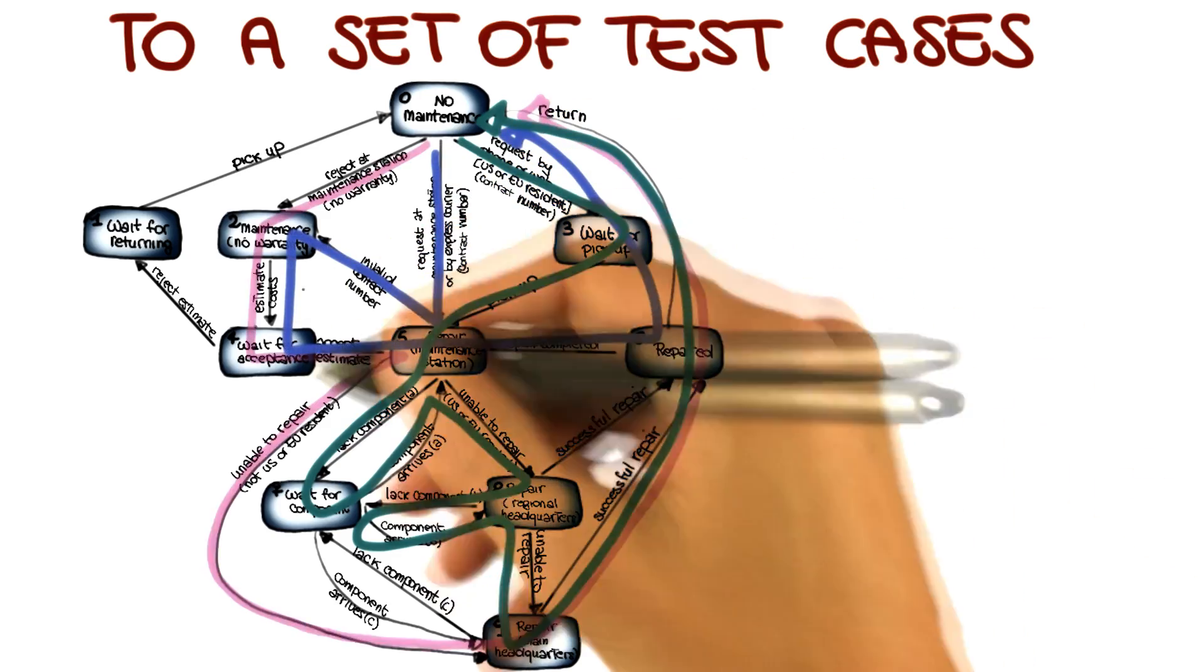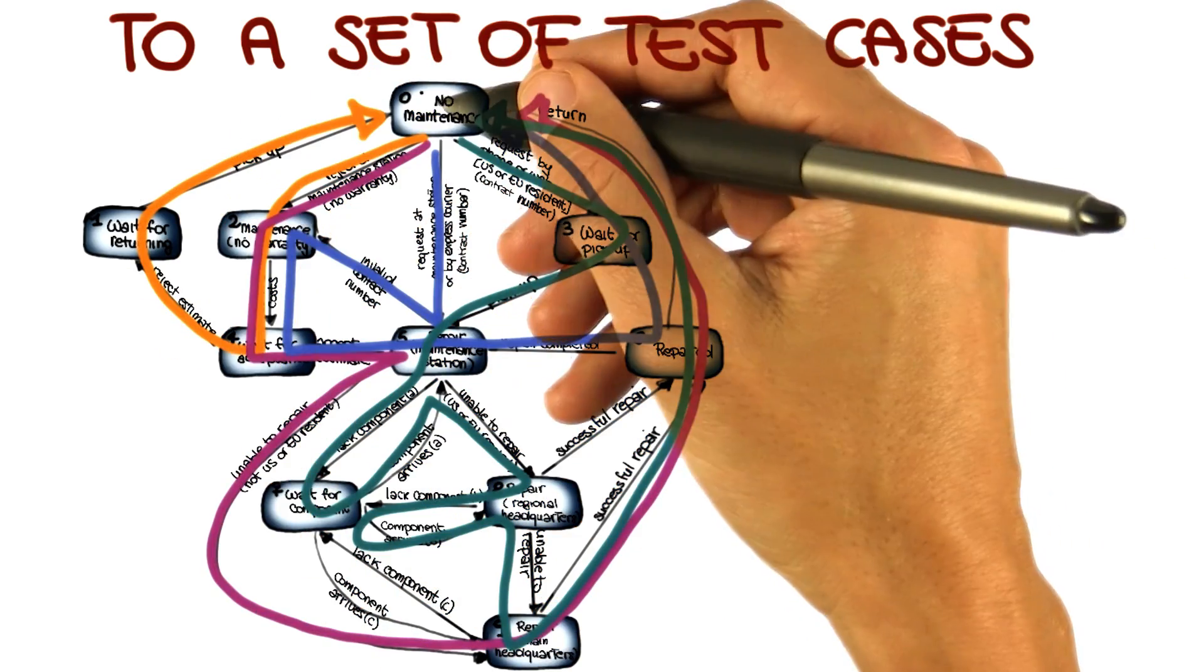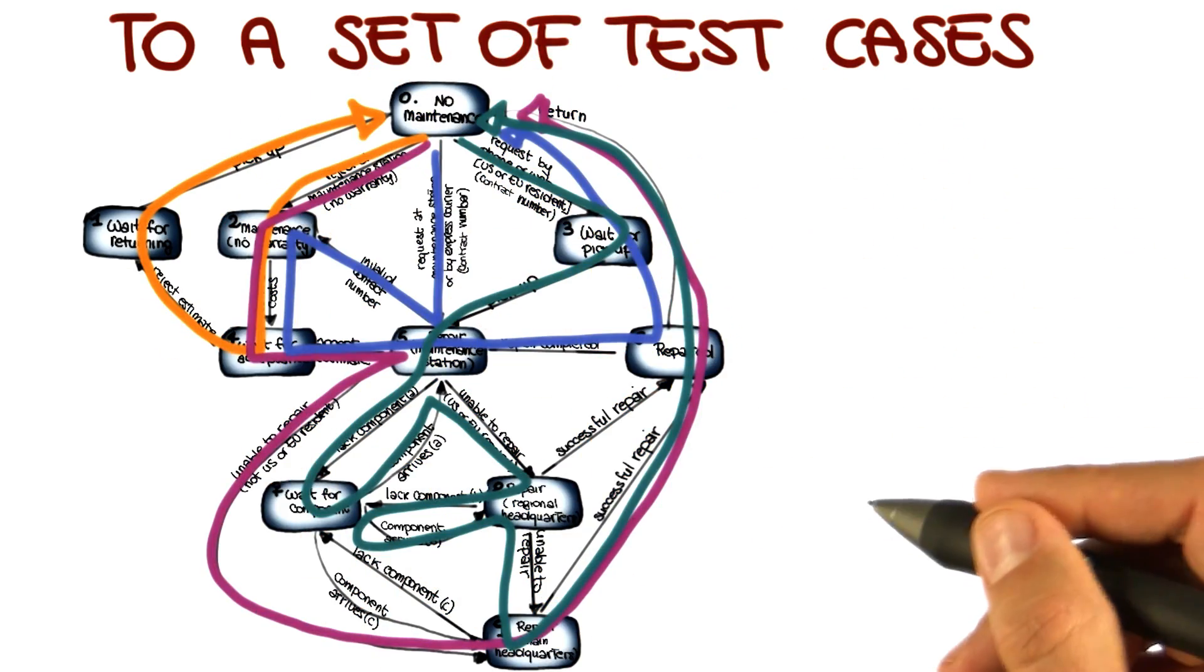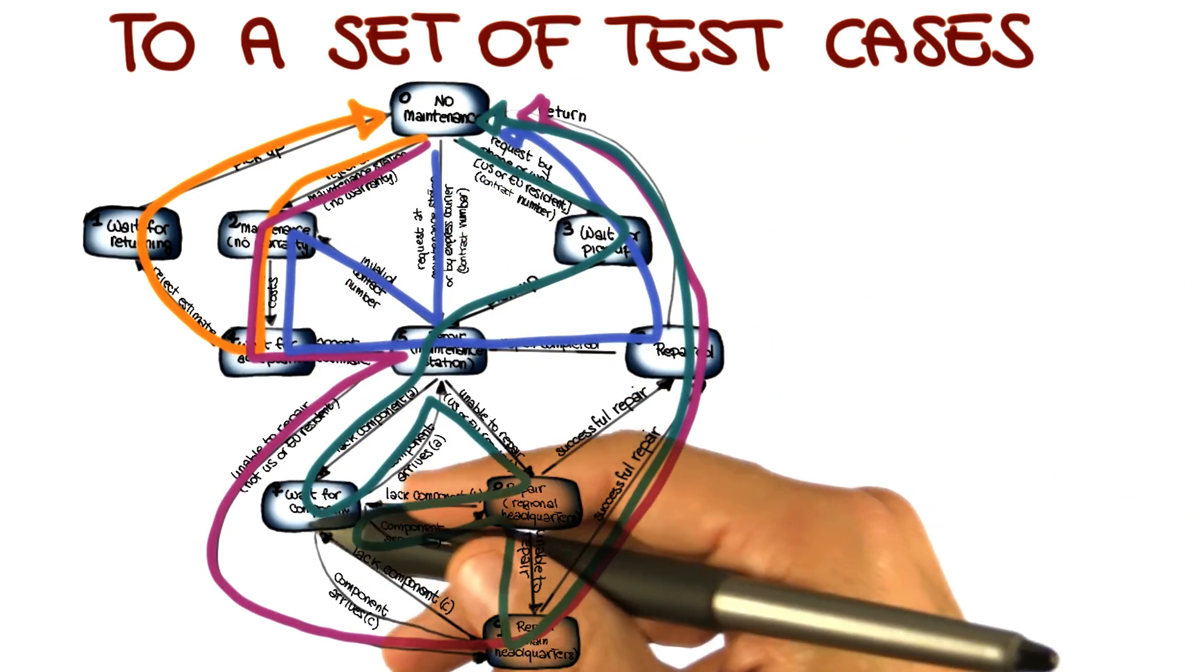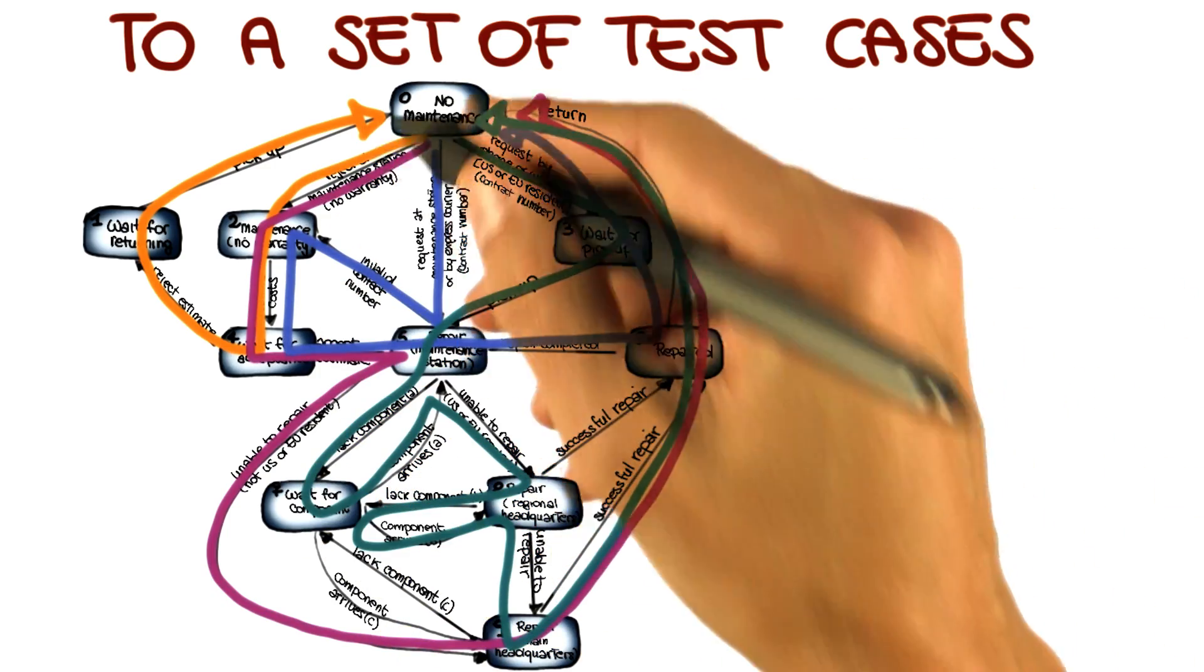Like the one I just drew, or this one, this one, and this one. So if we consider these four test cases, we can see that all the states in my system, or at least all the states that I have identified, are covered.